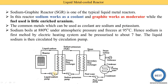Sodium is first melted by an electric heating system and pressurized to about 7 bar. Before putting sodium into the primary circuit, we melt it in an electric heating system. Then this liquid sodium is supplied to the reactor using a liquid sodium pump, and the pump circulates it through the system.